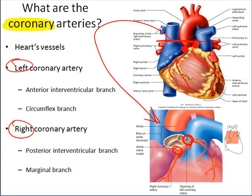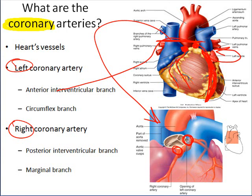Looking at a cross-section of the aorta, you can see the openings leading to the left and right coronary arteries. The left coronary artery divides into two major branches: the anterior interventricular branch, which runs down the front of the heart along the interventricular septum, and the circumflex branch, which circles around the heart to the backside. On the right coronary artery, there is the posterior interventricular branch, which wraps around the back and runs along the posterior interventricular septum, and the marginal branch, which runs along the edge of the heart midway between the anterior and posterior sides.